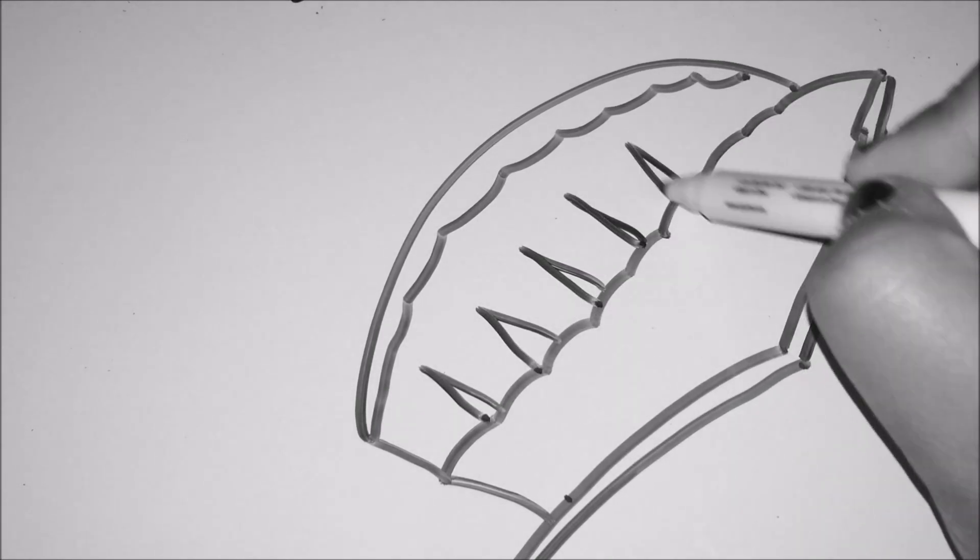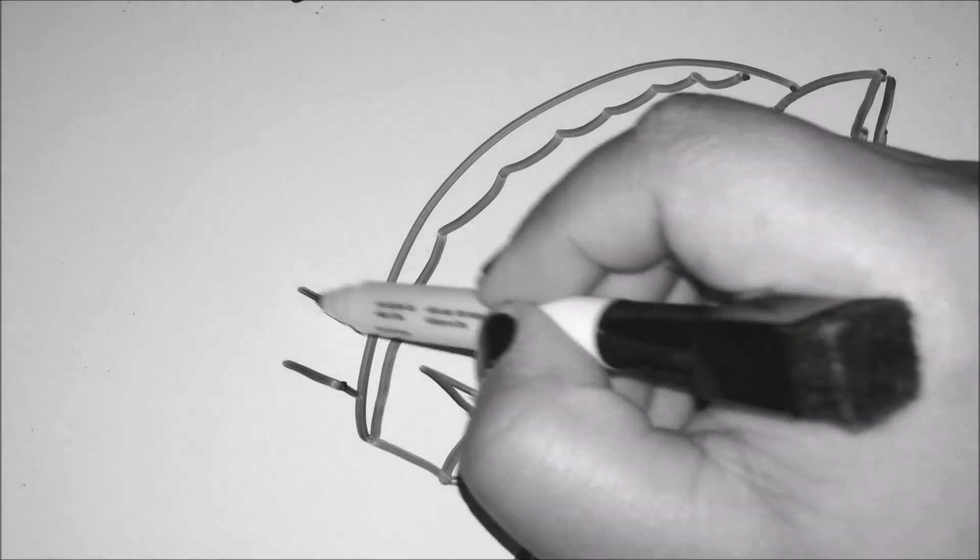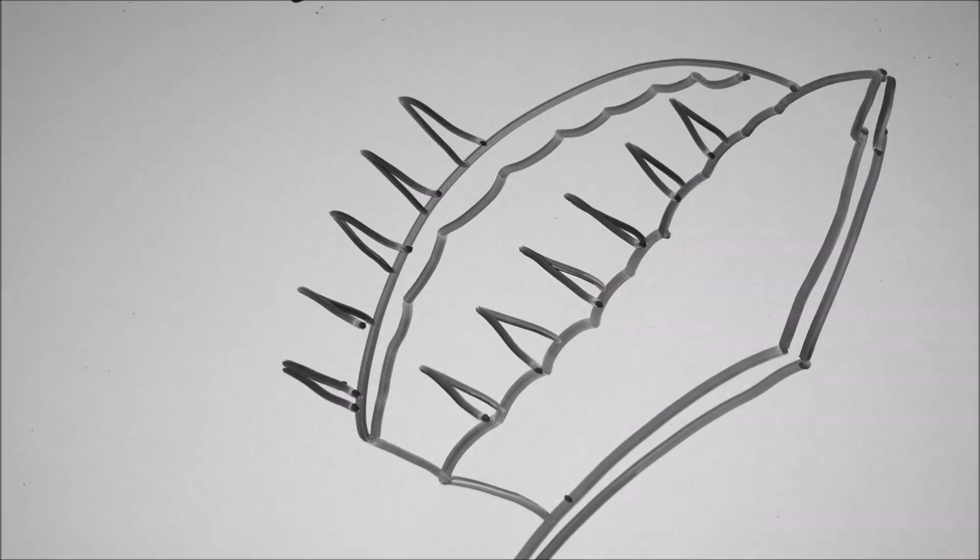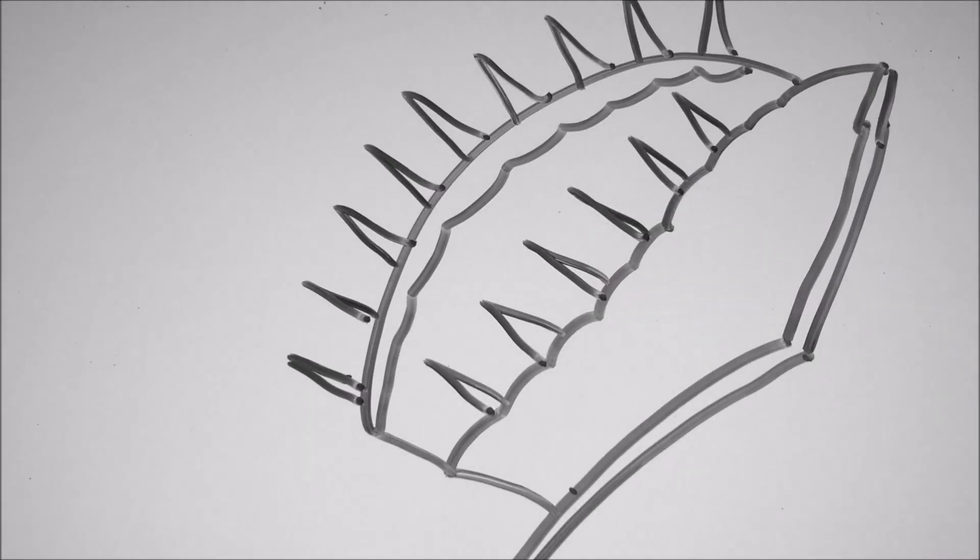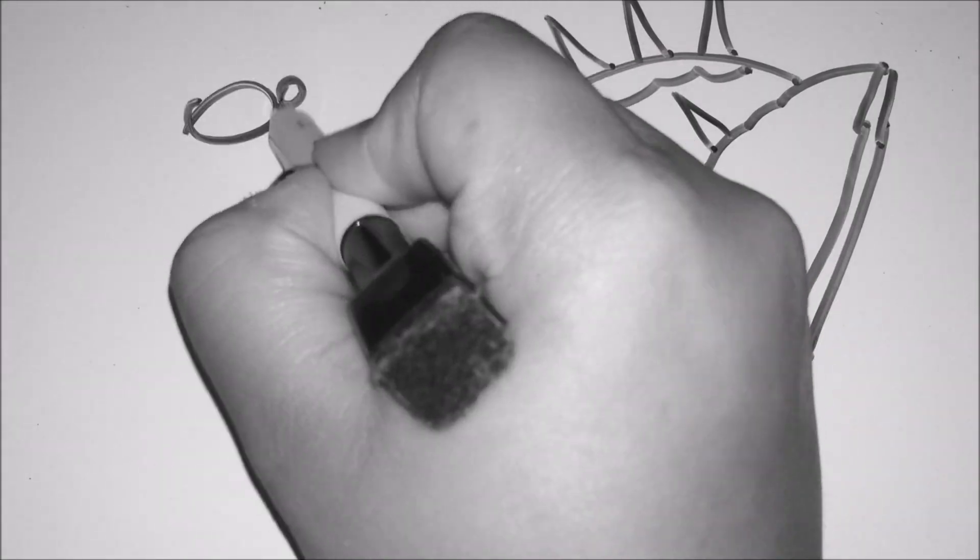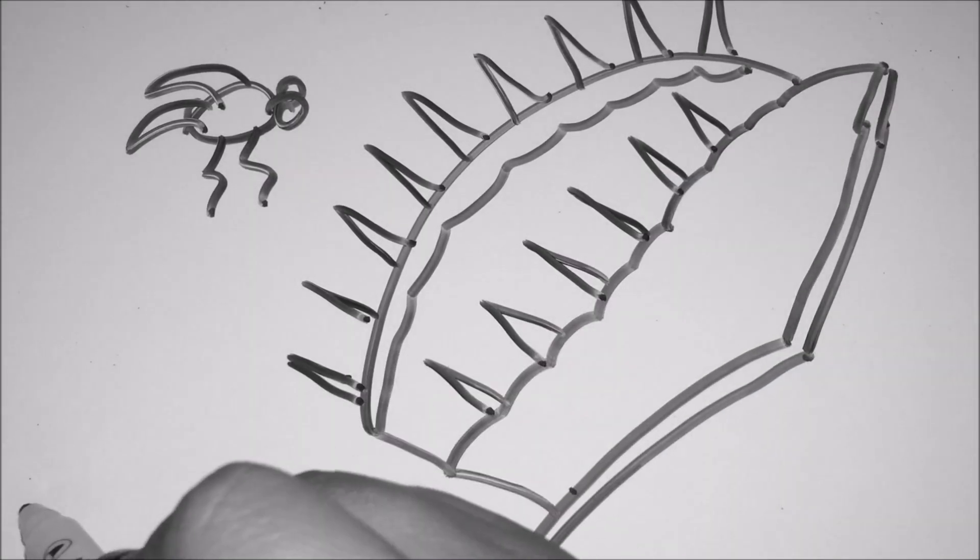Basically, a Venus flytrap has hair-like structures sticking out called trigger hairs. When an insect touches one, the flytrap will sense it and automatically close and digest it. This is how a Venus flytrap responds to its environment.